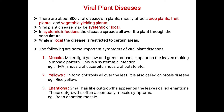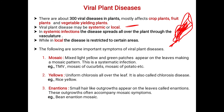The viral plant disease may be systematic or local. In systematic infection, the disease spreads all over the plant through the vasculature, infecting the whole leaf or the whole plant.